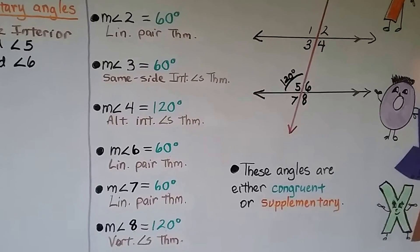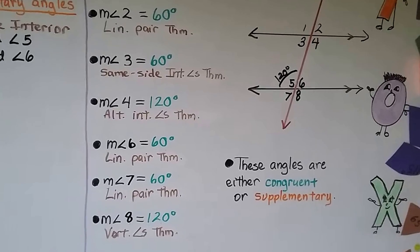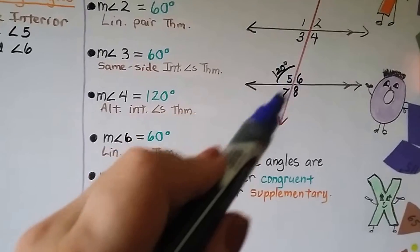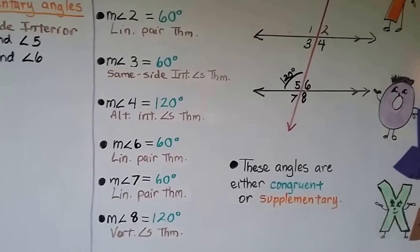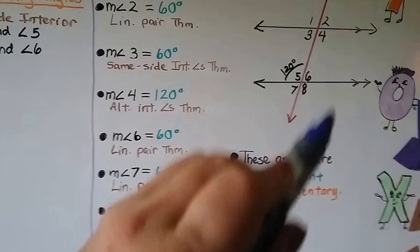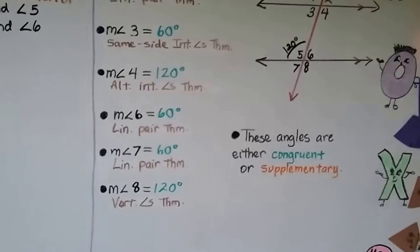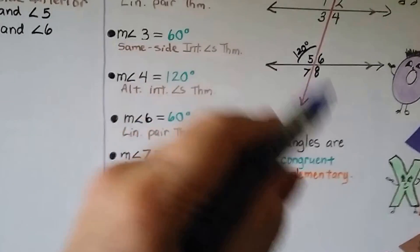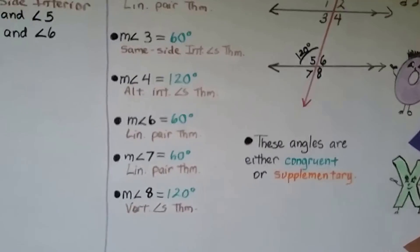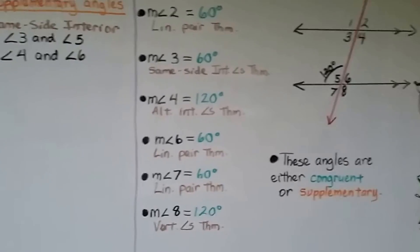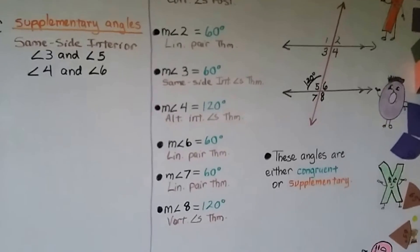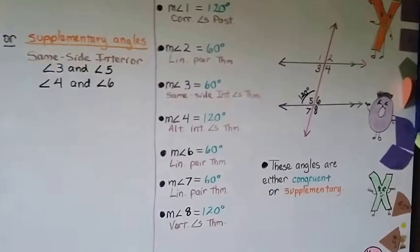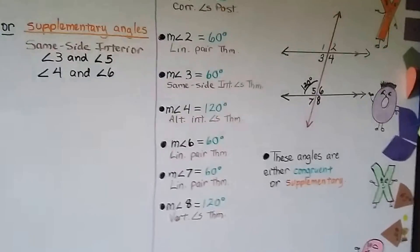The measure of angle 6 is 60 degrees by the linear pair theorem. The measure of angle 7 is also 60 degrees by the linear pair theorem — if angle 6 is 60, then angle 7 is also 60. They could also be justified as vertical angles. And the measure of angle 8 is 120 degrees because of the vertical angles theorem. So all angles are either 120 or 60 degrees — they're either congruent or supplementary, totaling 180.